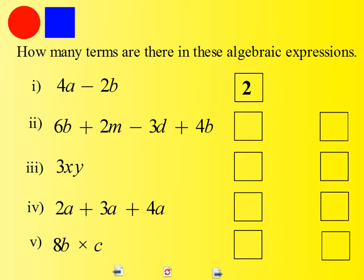Here at number 2, we have 6b plus 2m minus 3d plus 4b. And you see that each term is separated from another term by a plus or minus sign. So when we count them, 1, 2, 3, 4. 4 terms.